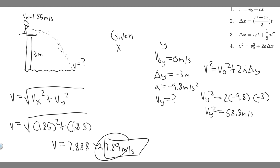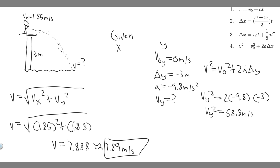So basically, we took the resultant of the final x and y velocities and got 7.89 meters per second — that's the answer to this problem.